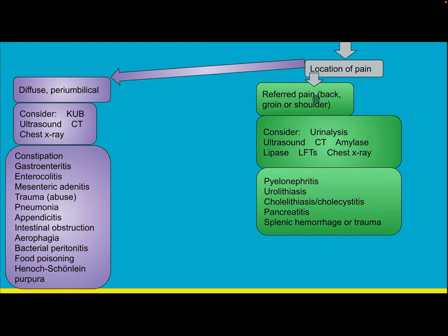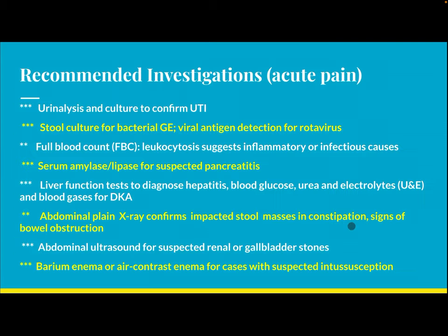If pain is referred to the back, groin, or shoulder, consider urine analysis, ultrasound, CT, amylase, lipase, liver function tests, and chest X-ray. Differential diagnosis includes pyelonephritis, urolithiasis, cholelithiasis, cholecystitis, pancreatitis, and splenic hemorrhage or trauma.